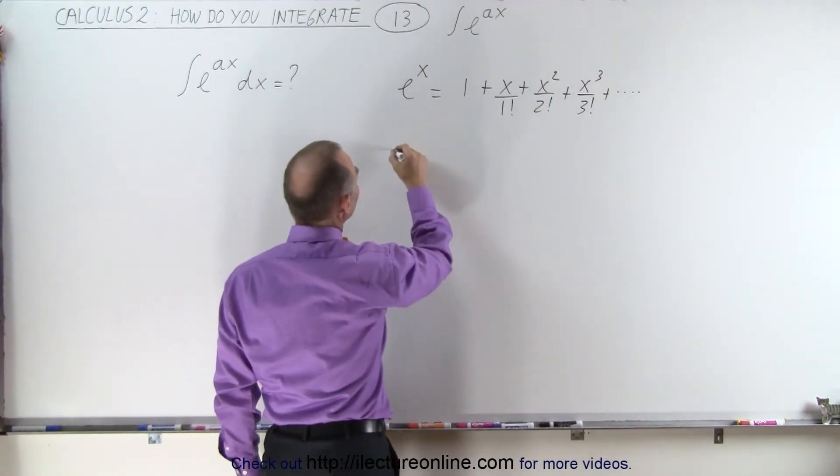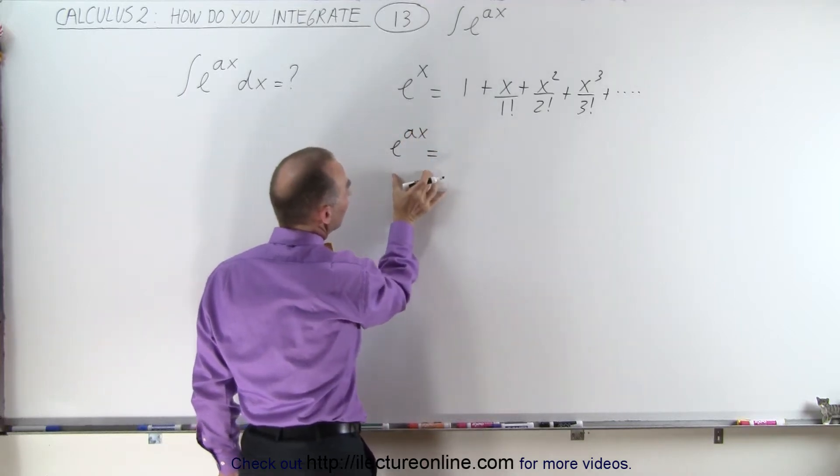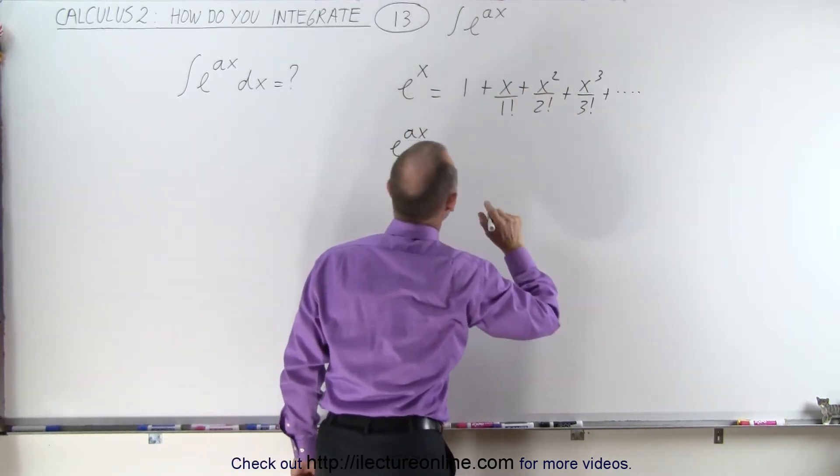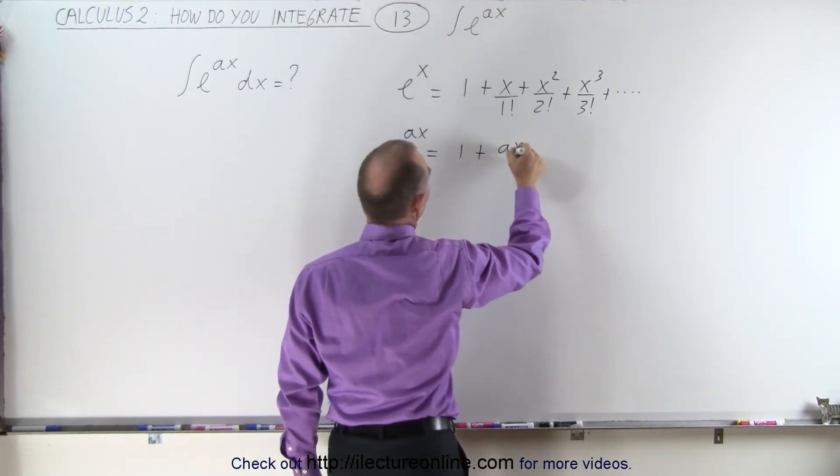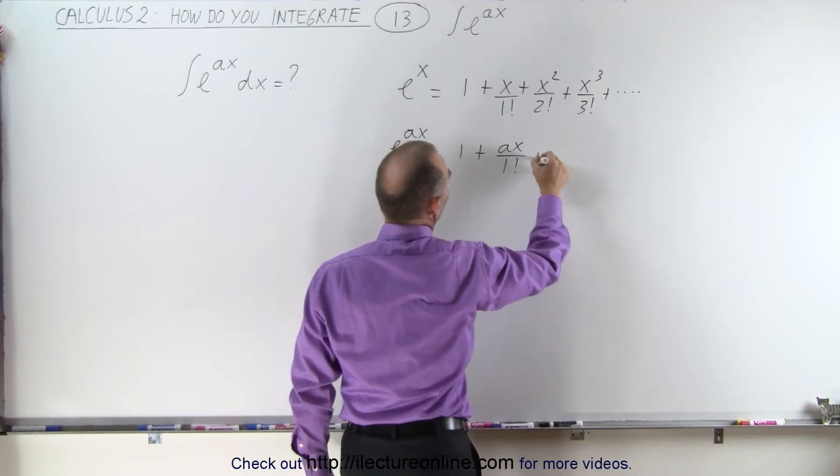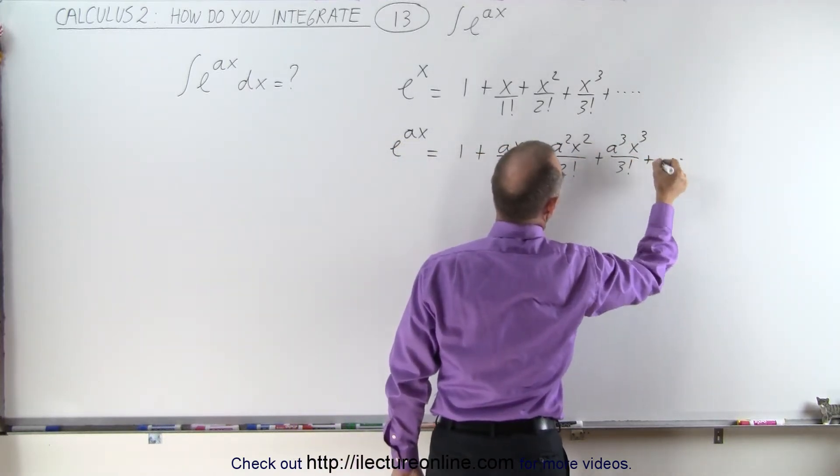That means that e to the ax is equal to—all we have to do here is replace every x by ax. This then becomes 1 plus ax over 1 factorial plus, and you can see the pattern here.